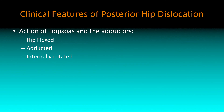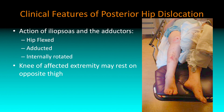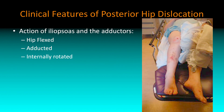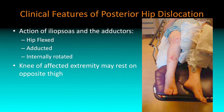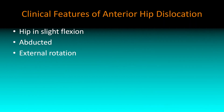Back to posterior hip dislocations — what are you going to see when you see the patient? Their hip is going to be flexed, adducted, and internally rotated — this all goes back to where the muscles are pulling when the joint is out of place. The knee may actually be sitting on the other knee because of how it's internally rotated. The extremity itself will look a little shortened, similar to hip fractures. And because of the internal rotation, you may notice the greater trochanter is a little more obvious, or their buttocks might be more prominent.